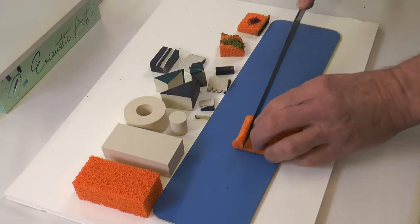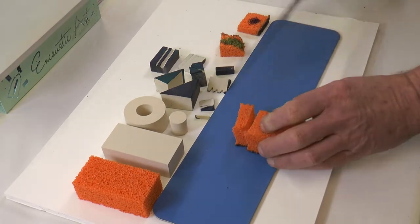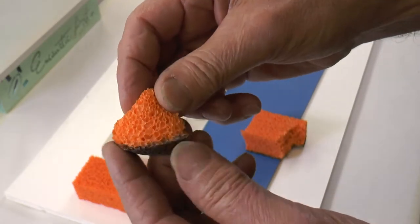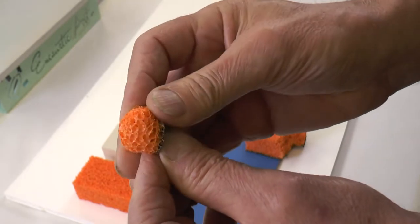The orange sponge, too, can be cut. This is very useful for working inside images, for dabbing, for putting in foliage, for evening out.